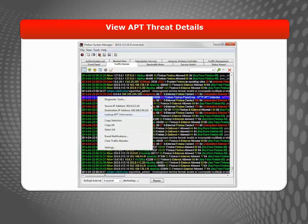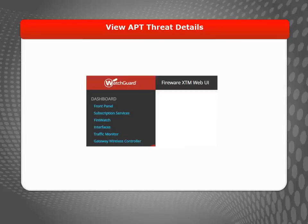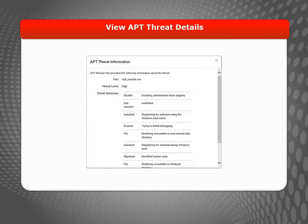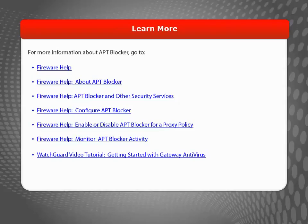To look up APT Blocker threat information from Firebox System Manager, select the Traffic Monitor tab. Right-click an APT traffic log message and select Look up APT information. To view information about APT Blocker threat actions from the Web UI, select Dashboard Traffic Monitor. Find and click on an APT Blocker log message to see all the details about the APT threat. To learn more about APT Blocker, visit the WatchGuard website.